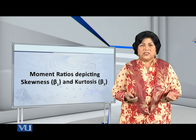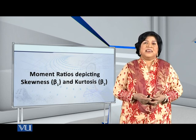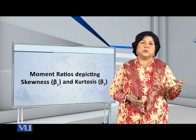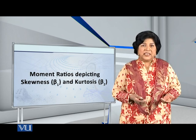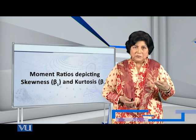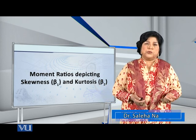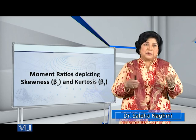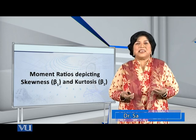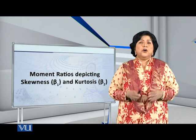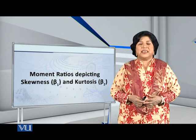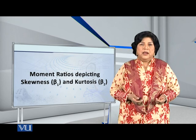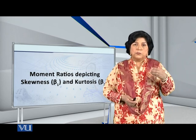You know it properly. If the right tail is longer than the left tail, we say that the distribution is positively skewed. If the left tail is longer than the right tail, then we will say that it is negatively skewed. And if it is balanced, then we will say that it is symmetric, it is not skewed. So how will we measure this?